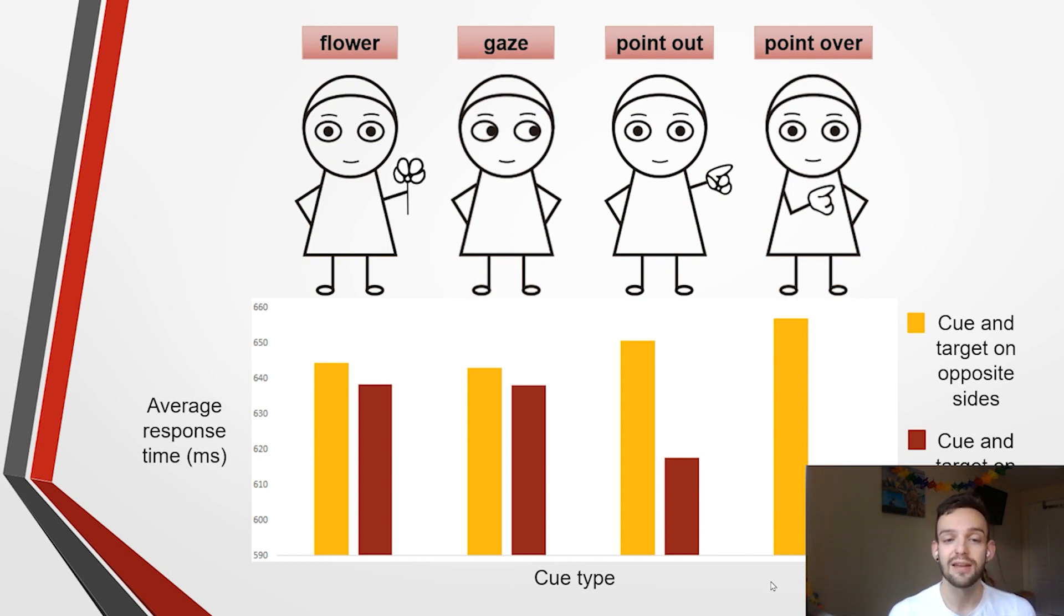I conclude then that the pointing index finger is special for directing attention. Knowing how and why we pay attention to pointing cues from this simple experiment helps us understand how we learn from and remember the visual world around us. So next time you want to test if your date is paying attention to you, don't look at the painting on the wall, point to it.